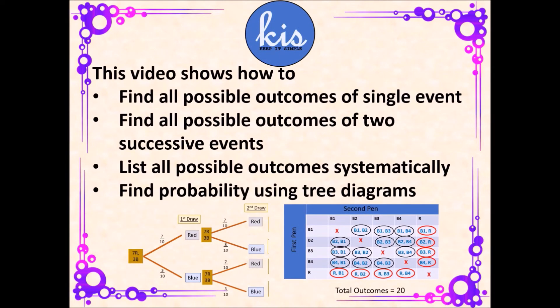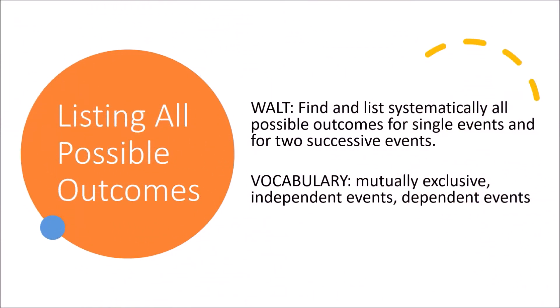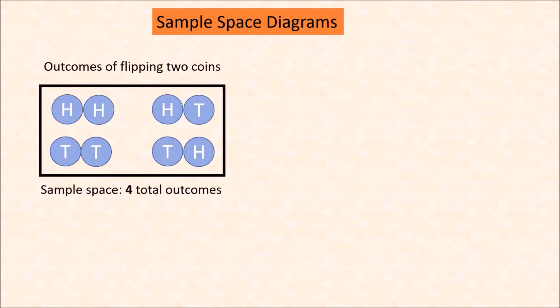Good morning students, welcome to our lesson for today. In this lesson, we will find and list systematically all possible outcomes for single events and for two successive events. The keywords we are going to use are: mutually exclusive, independent events, and dependent events. Mutually exclusive means they cannot happen at the same time.